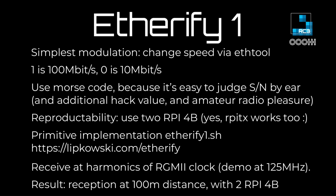To reproduce this demo, I used two Raspberry Pi 4s because it's hardware anyone can get. I made a primitive implementation as a shell script. We'll try to change the speed and receive the signal at the harmonics of the RGMII clock. The result was quite surprising: I was able to receive it at 100 meters, which is really a lot — most Tempest demos work for meters or even centimeters.